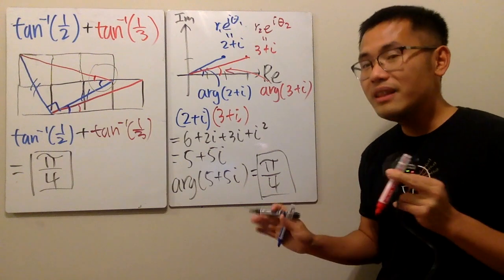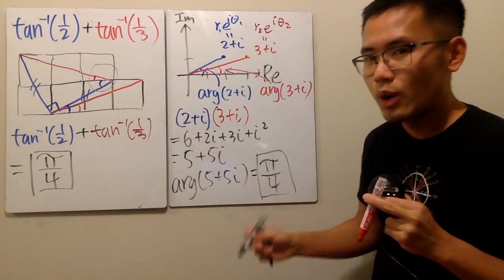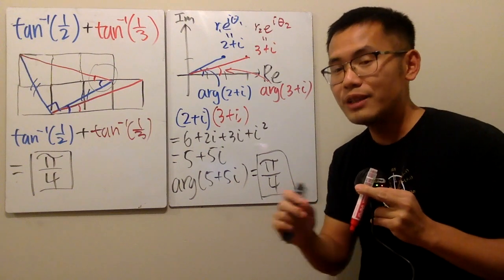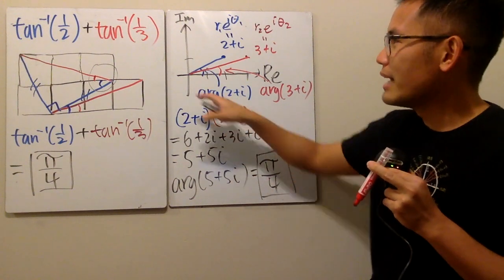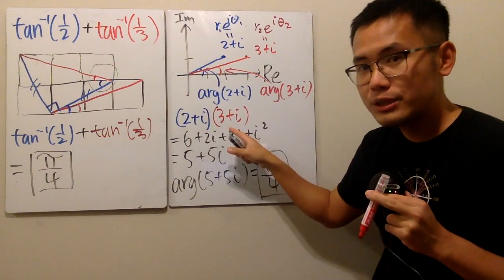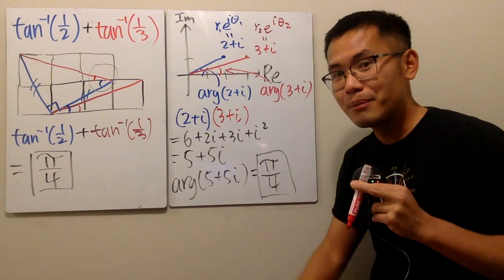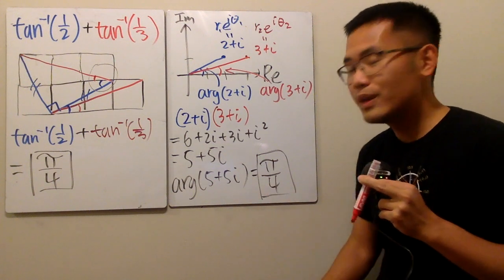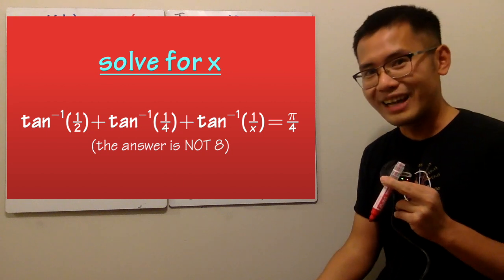And in fact, if you want to solve any kind of questions like this, inverse tangent, whatever, plus inverse tangent, whatever, as long as you make sure the angles are legit, right? You can always do this. Just multiply the corresponding complex numbers. And in the end, find out the angle of the complex number right here. This right here will be the answer. And you can go ahead and try this question on the screen if you would like, right? So now, that's it.